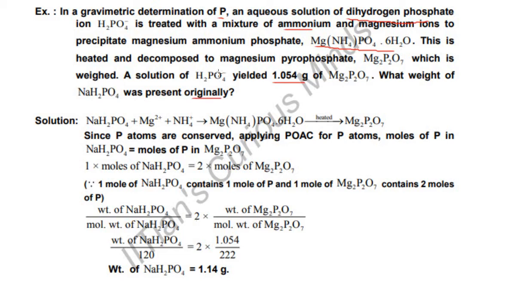This question is lengthy but simple. What you have given, follow it. The aqueous solution of dihydrogen phosphate ion is treated with a mixture of ammonium and magnesium ions. You can see over here all these ions.